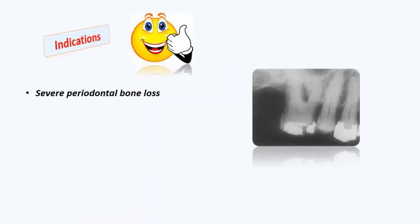The indications for resective approaches: when do we do a resection? First, severe periodontal loss around one root of a multi-rooted tooth. If there is severe periodontal loss around a single-rooted tooth causing a poor crown-root ratio, then it is indicated for extraction — resection cannot be done.